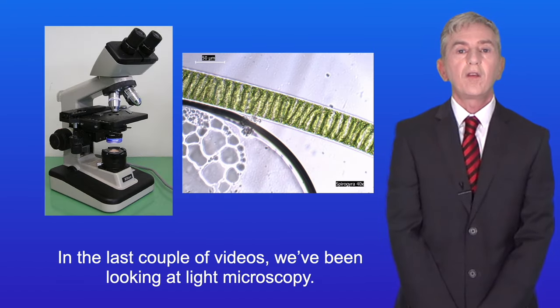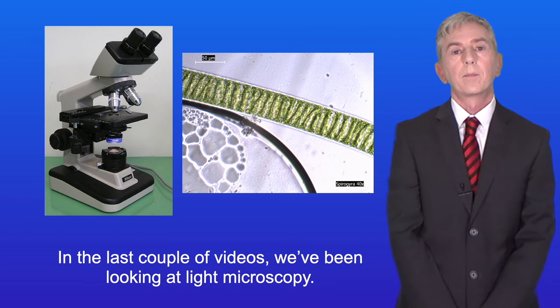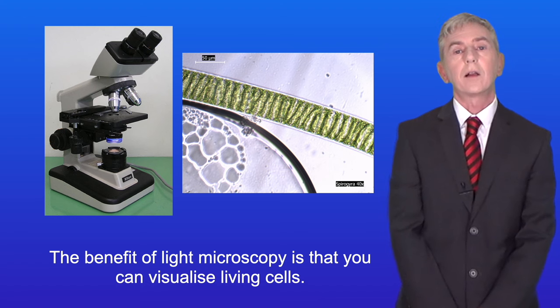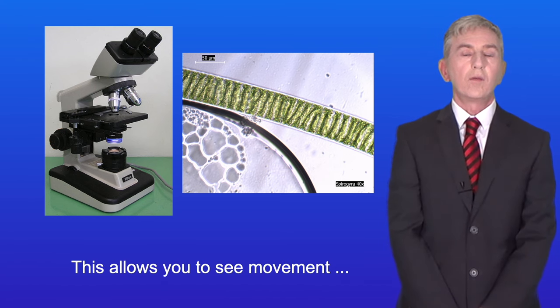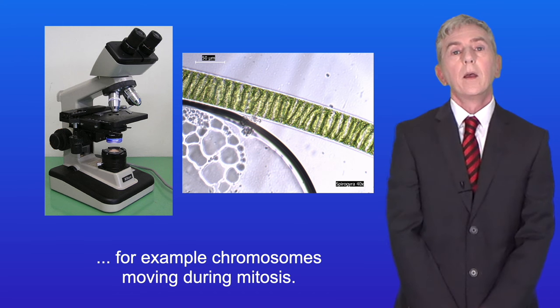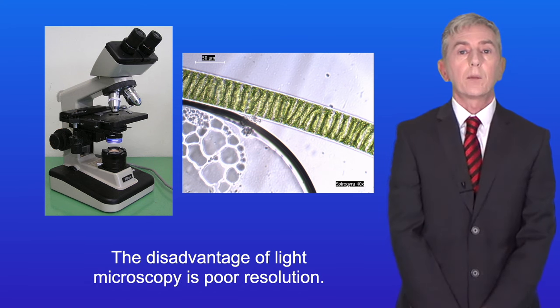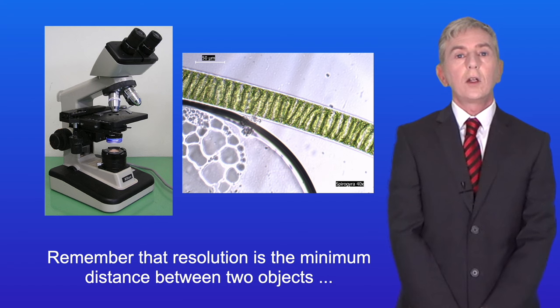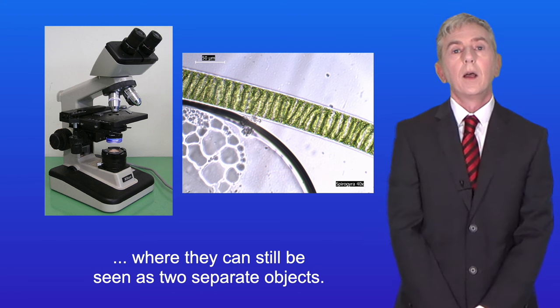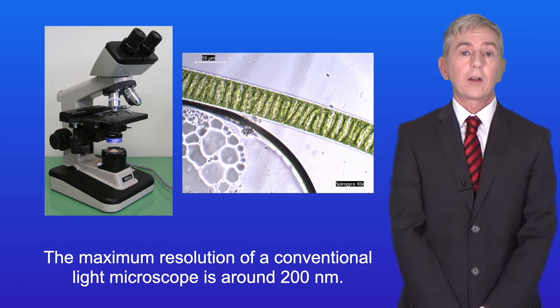In the last couple of videos, we've been looking at light microscopy. The benefit is that you can visualize living cells and see movement, for example chromosomes moving during mitosis. The disadvantage is poor resolution. Remember that resolution is the minimum distance between two objects while they can still be seen as separate. The maximum resolution of a conventional light microscope is around 200 nanometers.